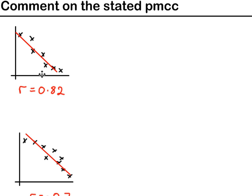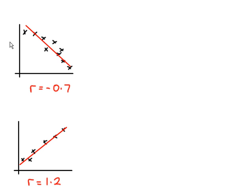For this scatter graph here, this PMCC value is wrong. Clearly, the correlation is negative, so this value should have been negative. For this graph here, the PMCC value of minus 0.7 is suitable.